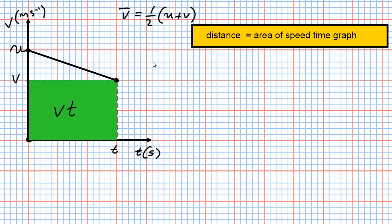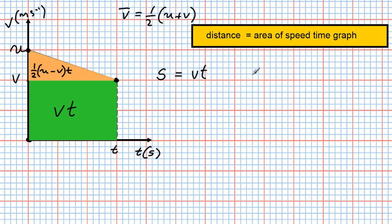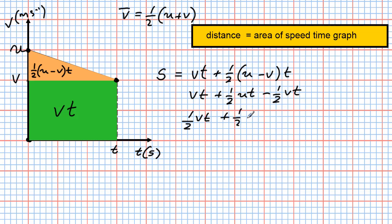The total distance s equals the rectangle area vt plus one half of (u minus v)t. Multiplying out the brackets gives us one half·ut minus one half·vt. The vt and minus one half·vt terms combine, leaving us with one half·vt plus one half·ut.